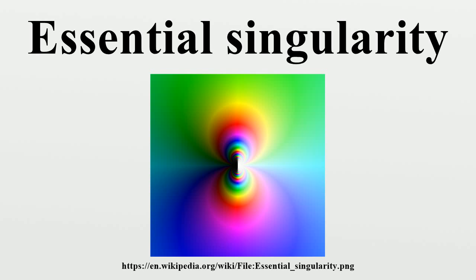Removable singularities and poles. Formal description: Consider an open subset U of the complex plane C. Let A be an element of U, and F: U \ {A} → C a holomorphic function. The point A is called an essential singularity of the function F if the singularity is neither a pole nor a removable singularity.